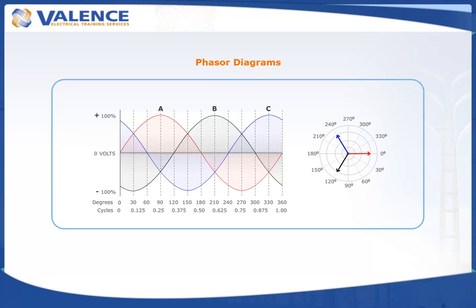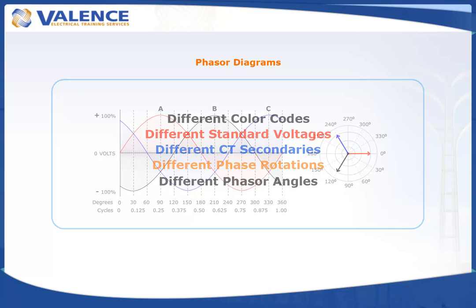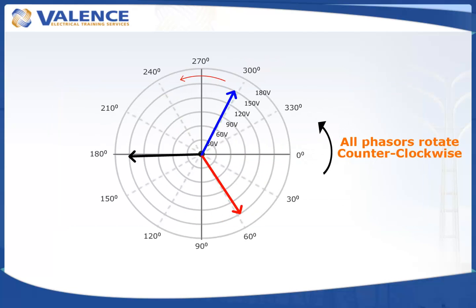The most confusing aspect of phasor diagrams is that it seems that nobody can agree on what phasor angles to use. Different parts of the world use different color codes, different standard voltages, different CT secondaries, different phase rotations, and different phasor angles to describe the same system. The only thing that the industry seems to agree on is that all phasors rotate counterclockwise.